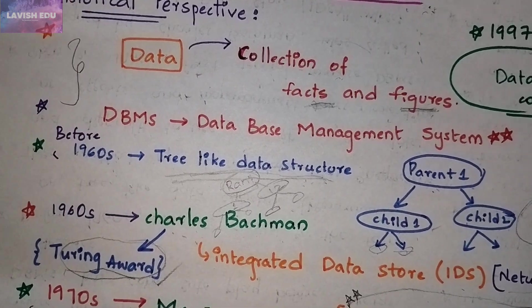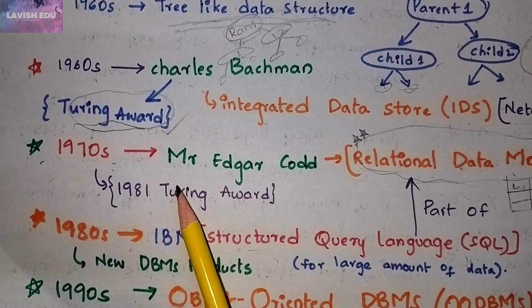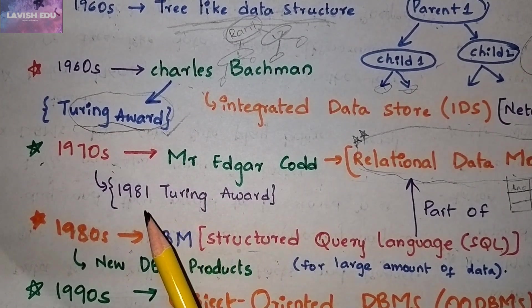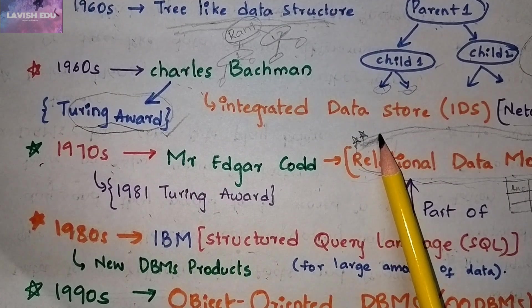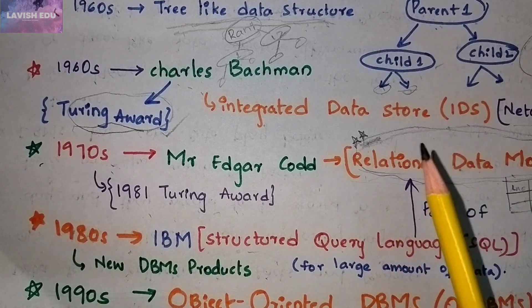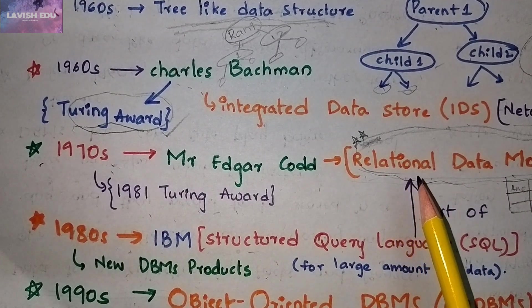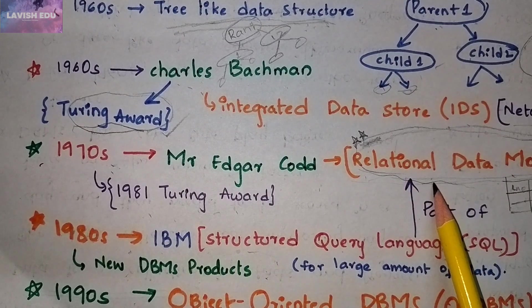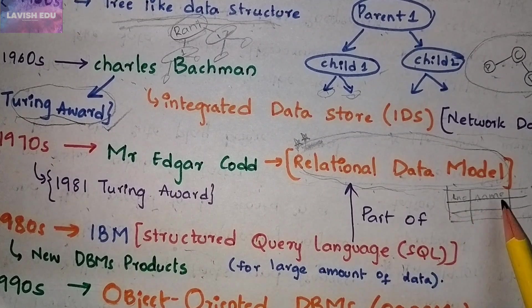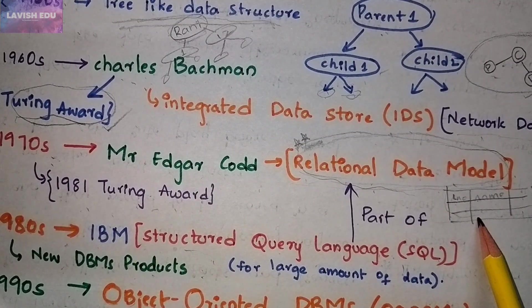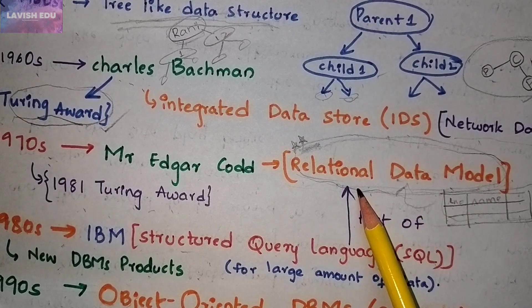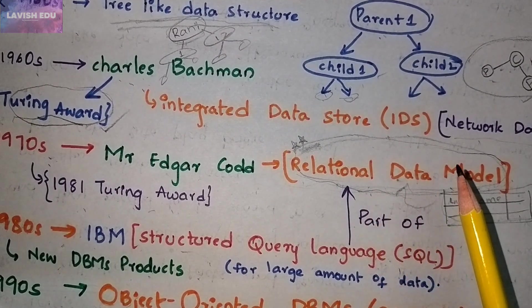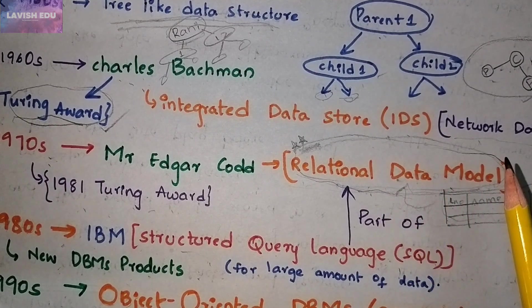In 1970, Mr. Edgar Codd was awarded the Turing Award in 1981 for his development of the relational data model. The relational data model is a very important concept. As discussed in the previous session, it uses a table with columns like roll number, name, and age to store related data. This table is called a relation, and the overall representation is called the relational data model. We will explore this in depth in further classes.